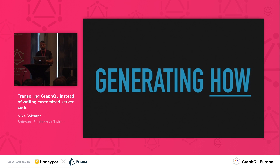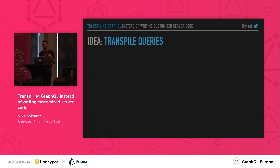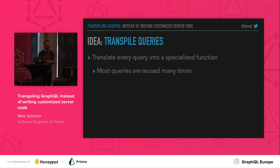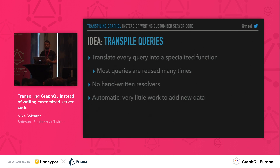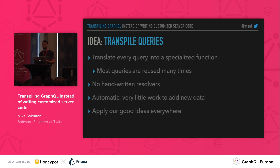That leads us to an idea: maybe we can generate most of our implementations instead of actually writing them. Instead of writing resolvers for each field, we can take a query and transform it into a specialized function with enough logic to fulfill that query. Most queries are reused many times, so this isn't a crazy expensive thing to do. This means there will be no handwritten resolvers, which addresses a lot of the potential issues we talked about. It's very little work to add new data to our schema, and we can apply our good ideas everywhere by generating them into the generated code.